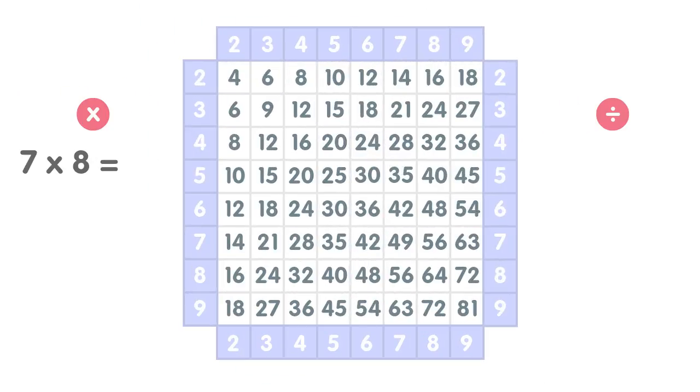Some say seven times eight is the hardest times table. Do you know the answer? The answer is 56.